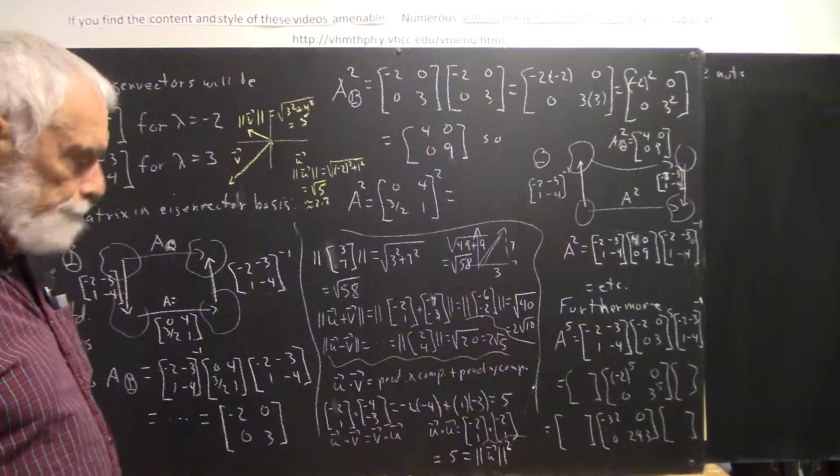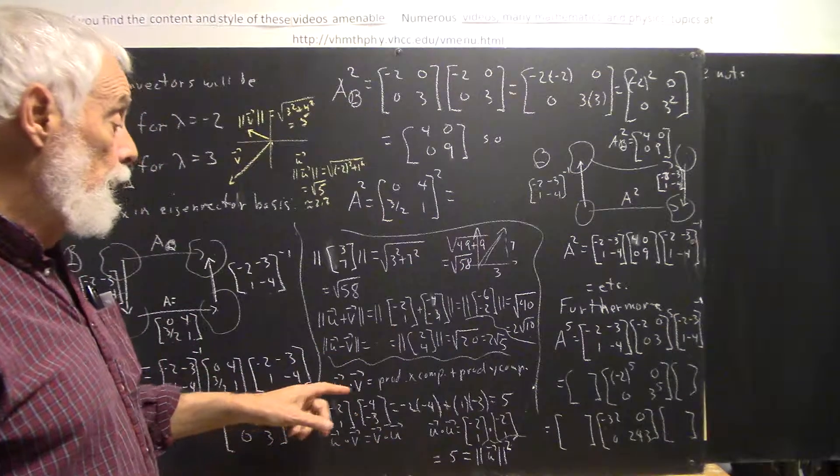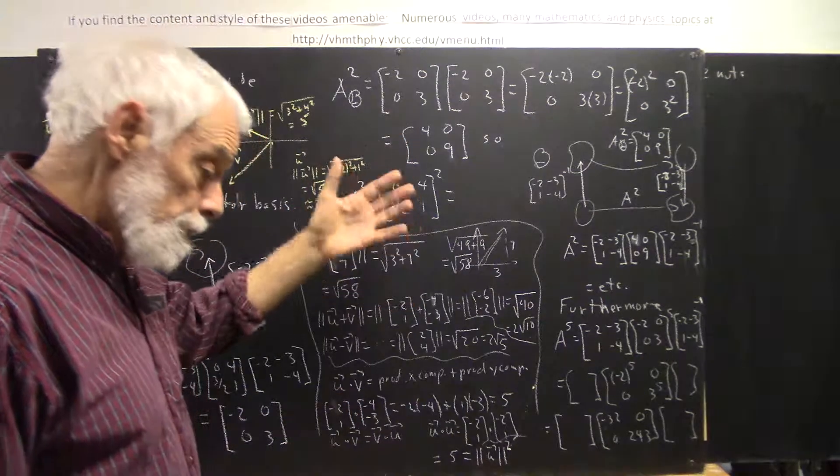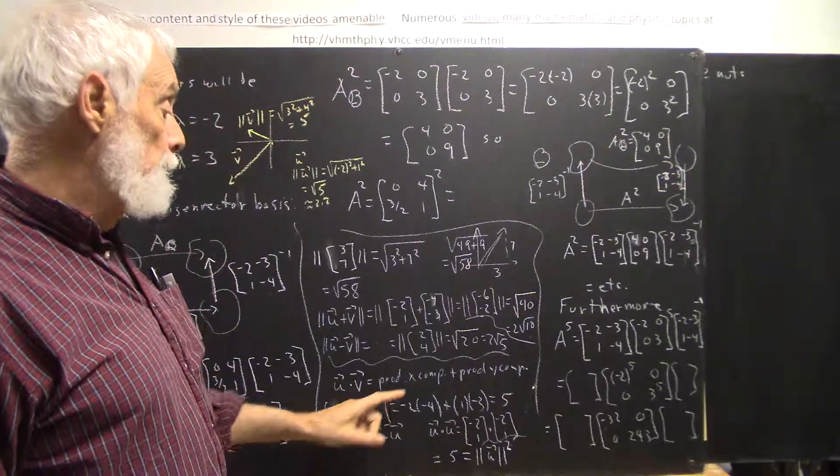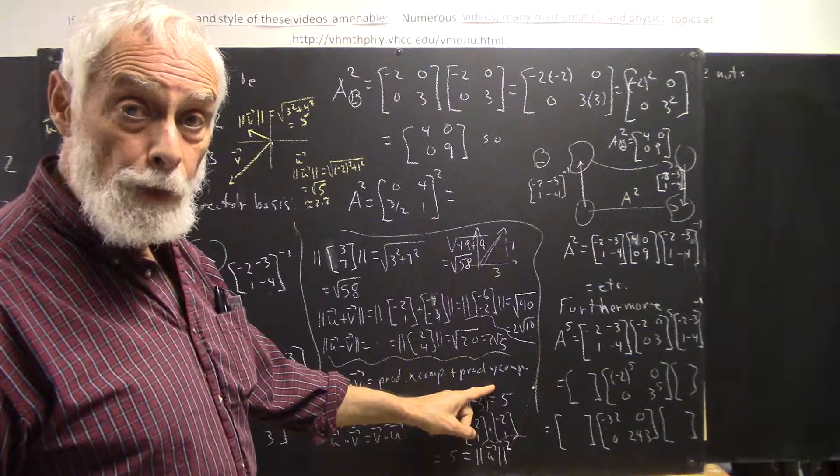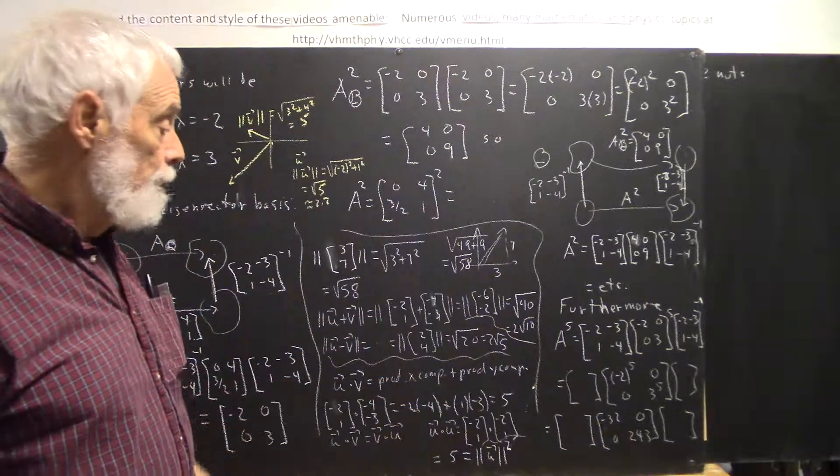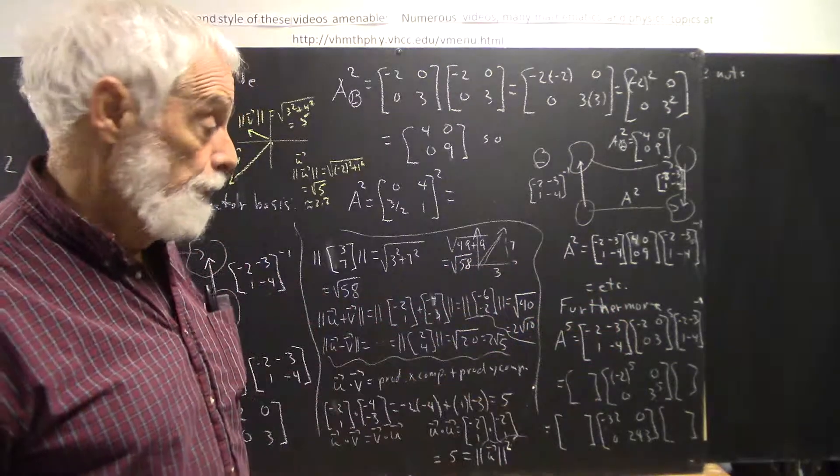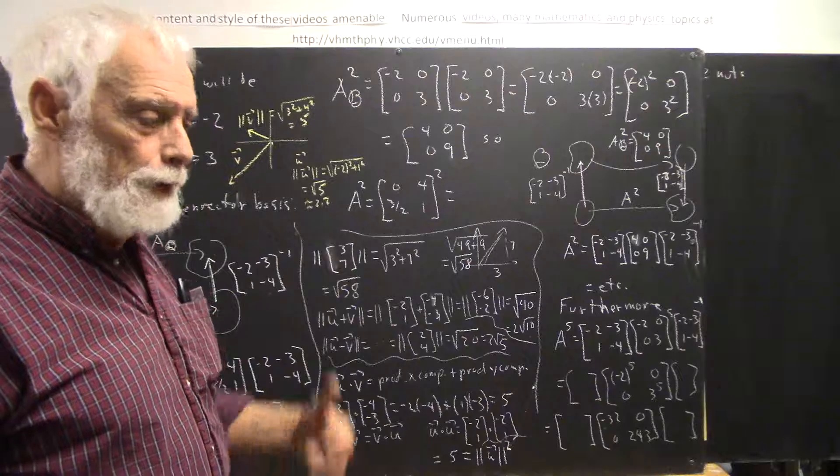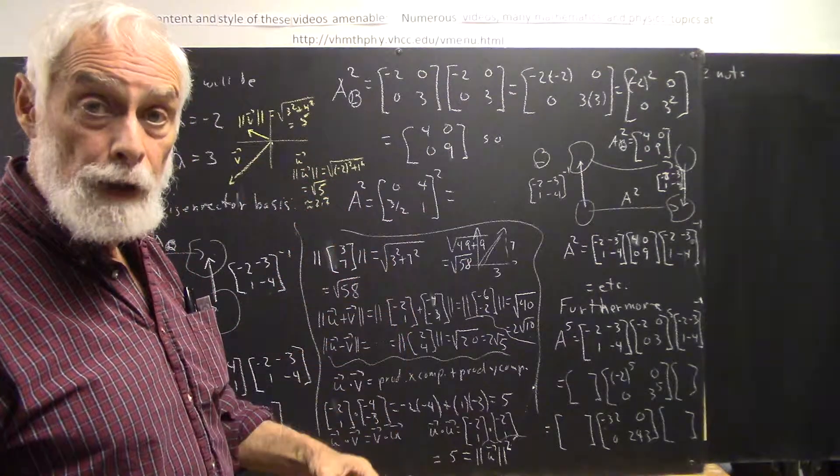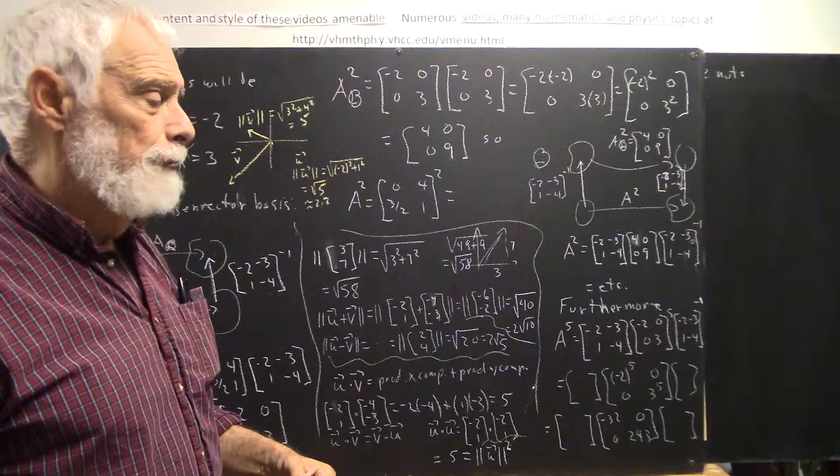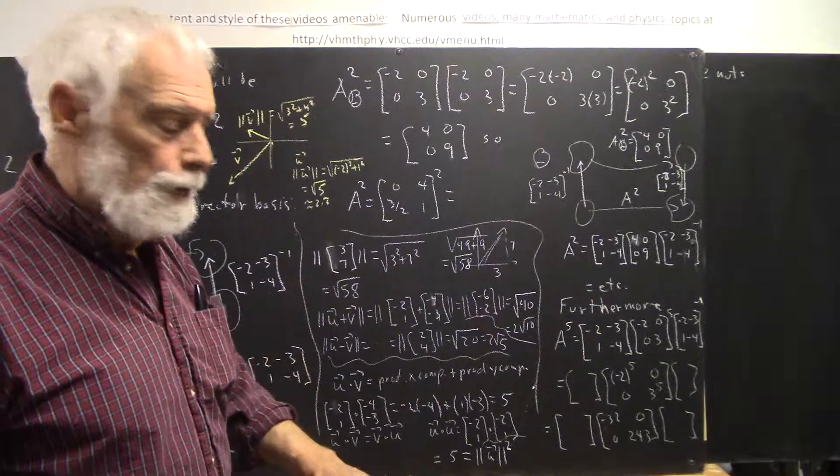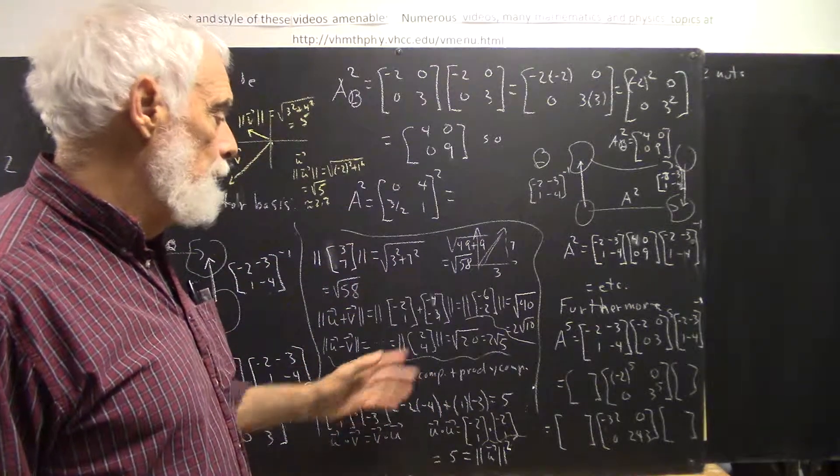Now we define the dot product u dot v. I'm just putting it in words here—it's very easy to calculate if you have the coordinates of the vectors. I'm just going to say it's the product of the x components plus the product of the y components. Now that's in R2. In R3 it would be the product of the x components, product of the y components, and product of the z components. In R4, well, you'd probably call your components x1, x2, x3, and x4, so it would be the sum of those products.